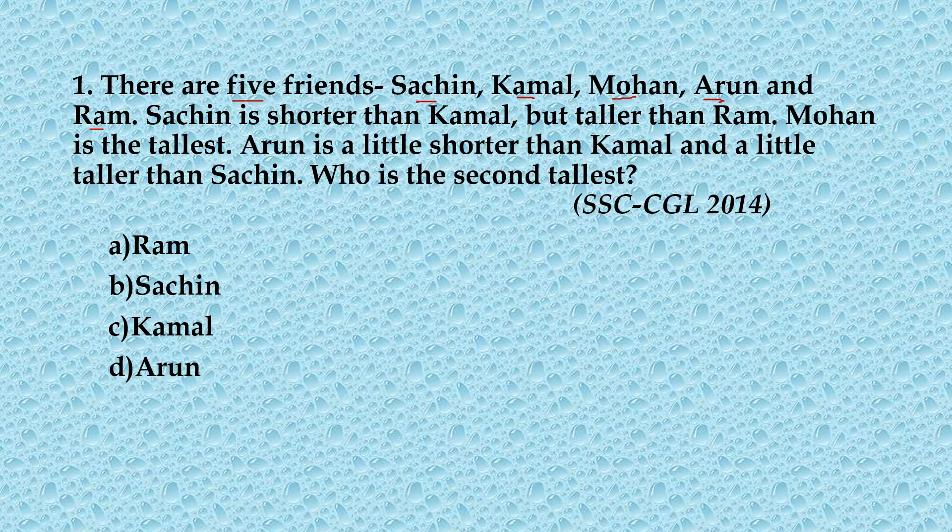Sachin is shorter than Kamal but taller than Ram. Mohan is the tallest. Arun is a little shorter than Kamal and a little taller than Sachin. We have to arrange these friends in increasing order of their height.